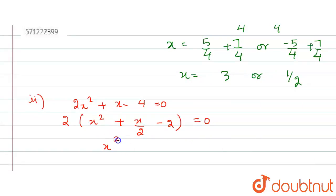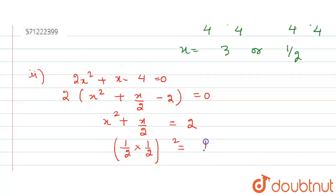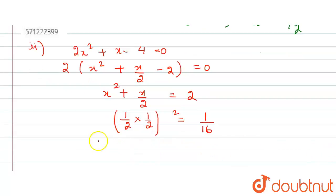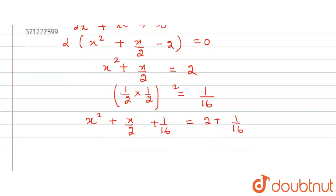Our new equation becomes x² plus x/2 equals 2. Now to complete the whole square on the left hand side, I take the coefficient of x, which is 1/2, multiply it by half, and then square it. The square gives 1/4 squared = 1/16. So I need to add 1/16 to both sides: x² plus x/2 plus 1/16 equals 2 plus 1/16.